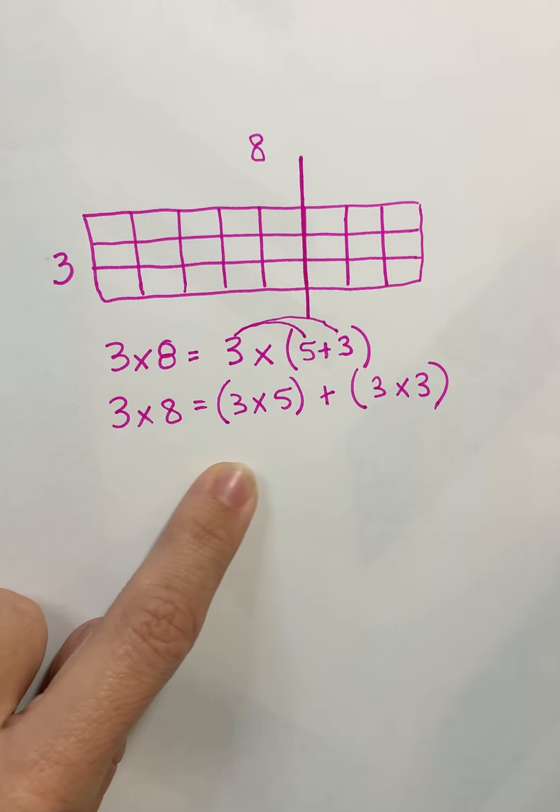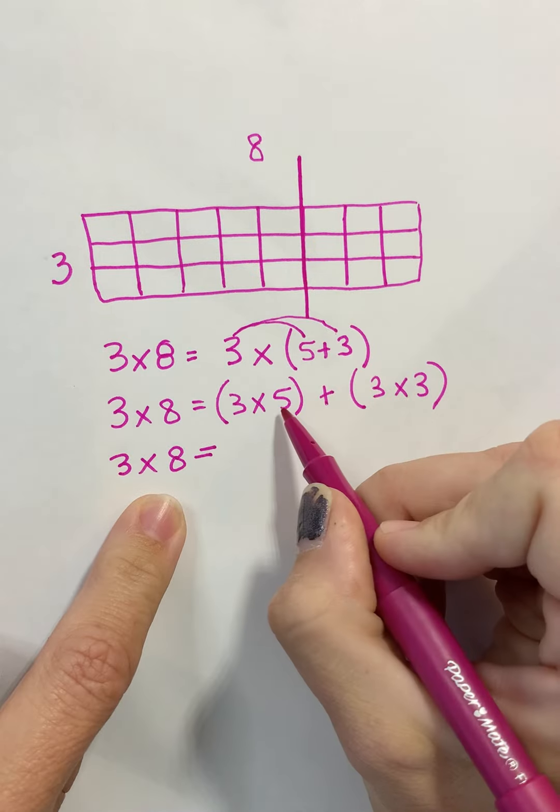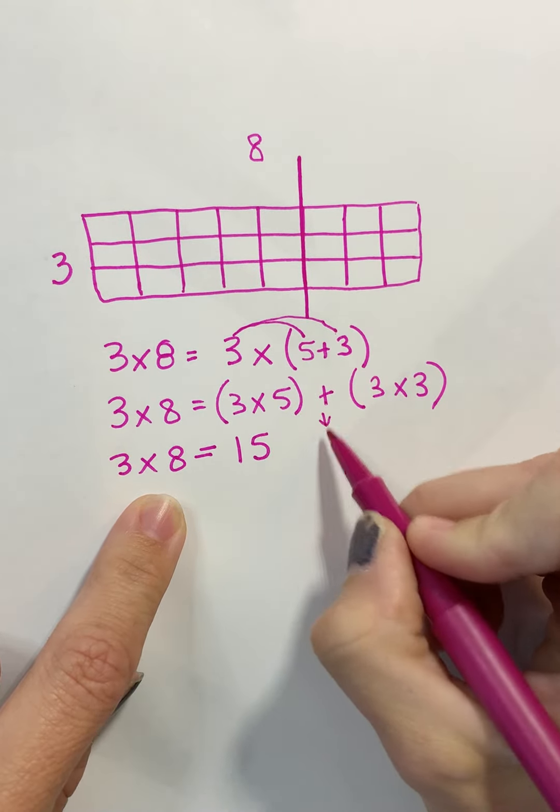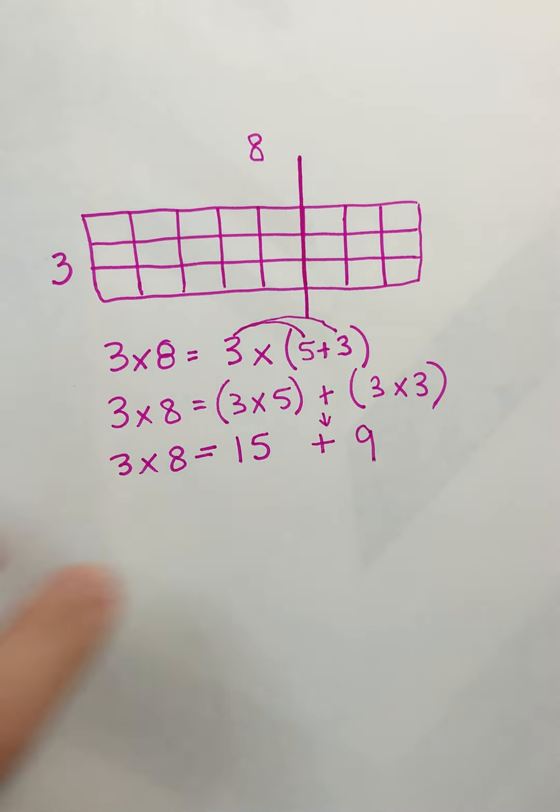Once they get to this step they're then going to solve it. 5 times 3, 15. Drop down the addition sign. 3, 6, 9. And you would solve this problem.